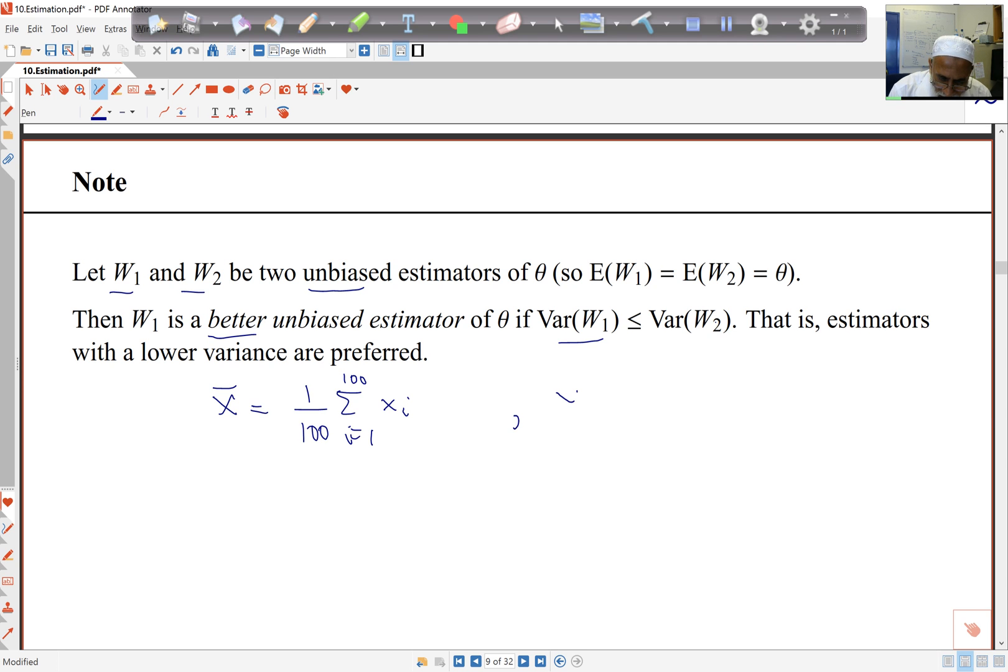And I've got another one here, say, Y bar, and that's based on a sample of 200. And let's suppose each of these is from the same population. So the mean for these is mu, and the variance for these is sigma squared.